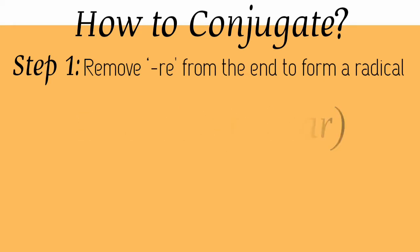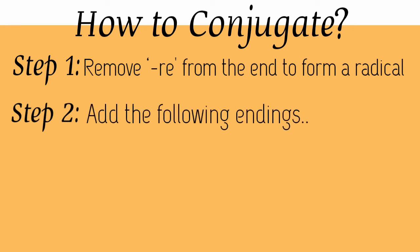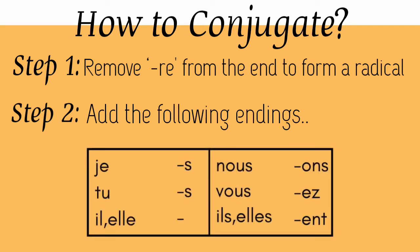Now in step two, we have to add the following endings to this radical according to the subject. The endings of the third group are: with je — s; with tu — s; with il and elle — there is nothing as an ending; with nous — ons; with vous — ez; with ils/elles plural — ent.